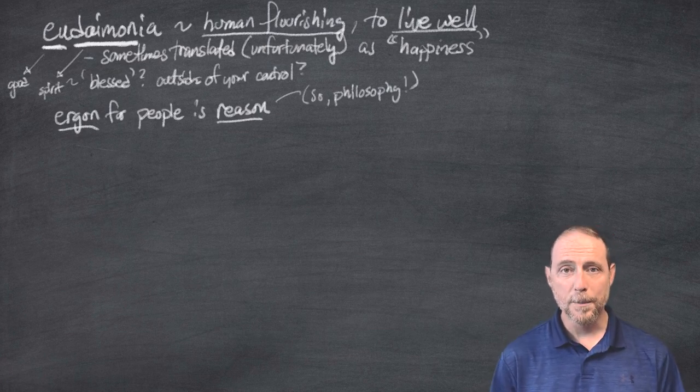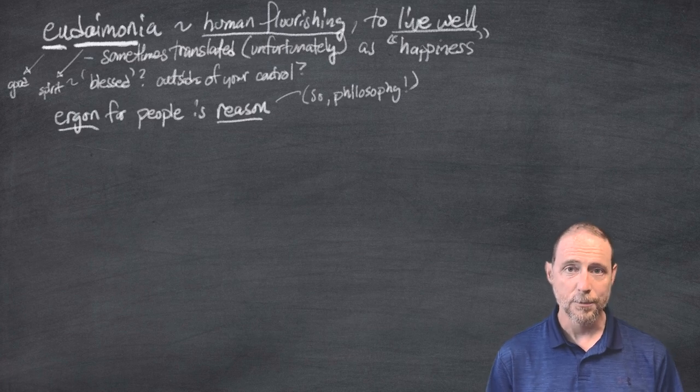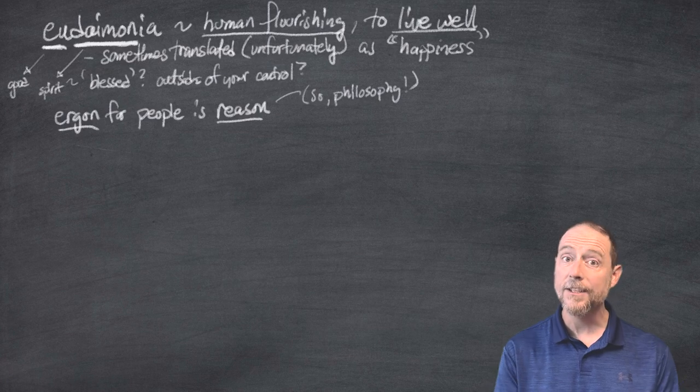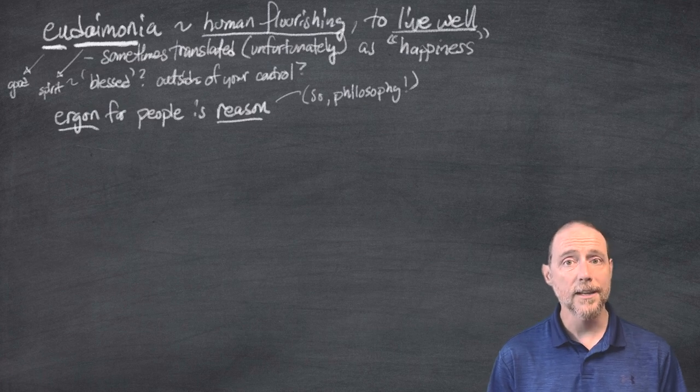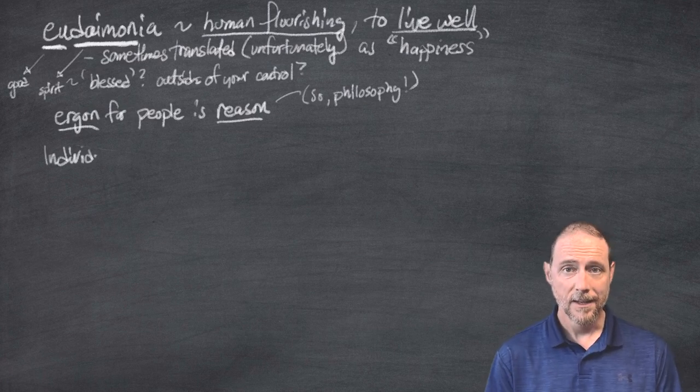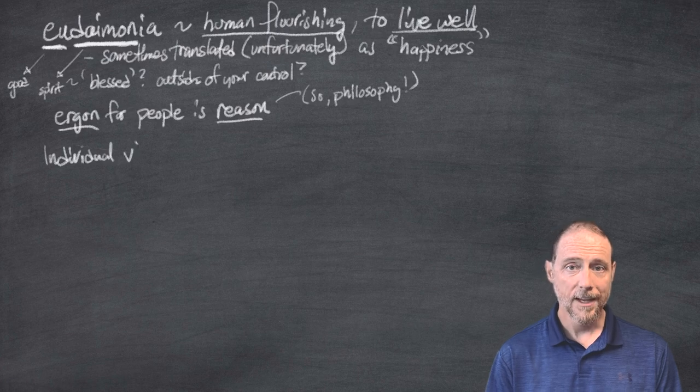The other part of the Nicomachean Ethics that is well known and that everybody should be familiar with is the idea of virtue itself and of the individual virtues as manifest as means between the extremes. For this, we need the ideal of sophrosyne. Sophrosyne is moderation. This is the mean between extremes.